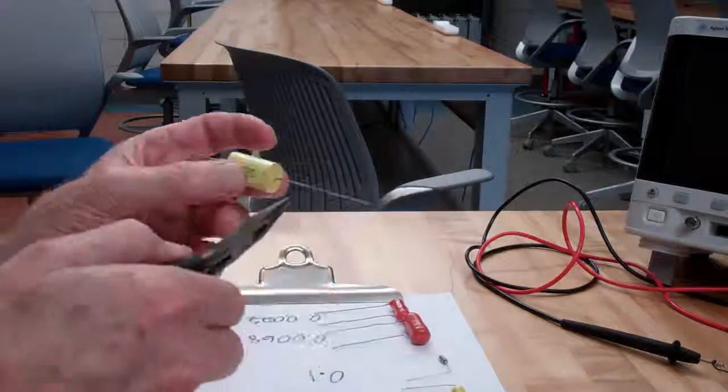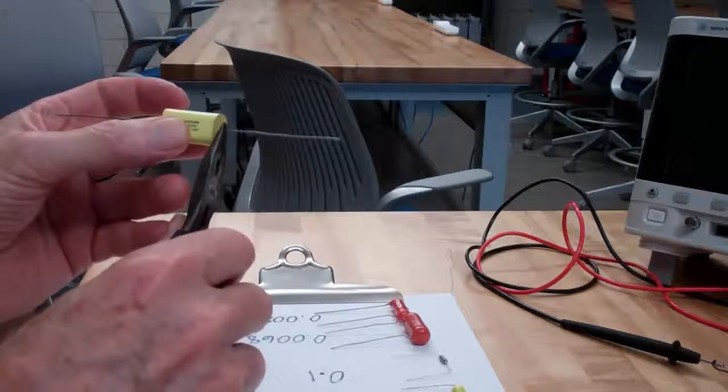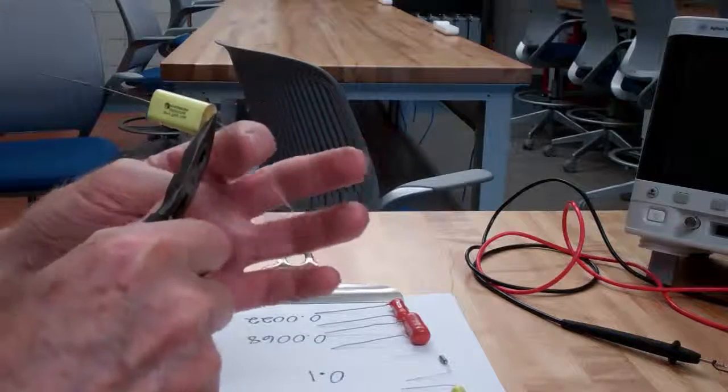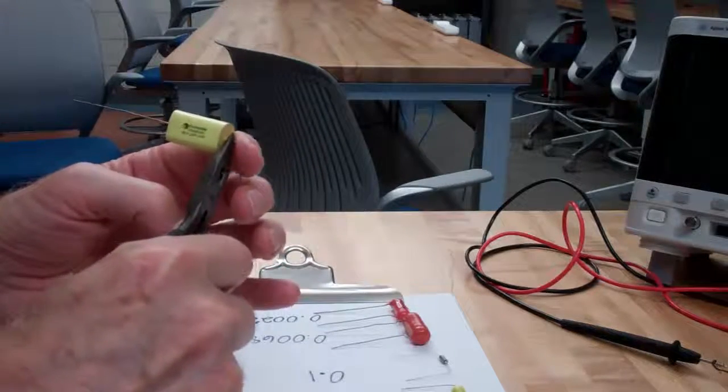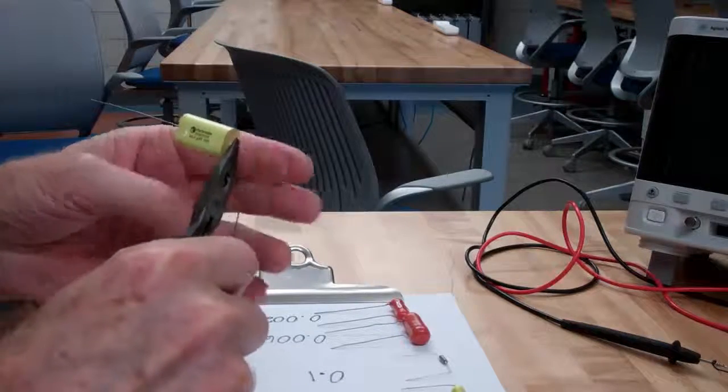To bend the wire close to the capacitor, I would grab the lead right where I want the bend and then bend the wire. That way, there's no stress at the junction of the capacitor.